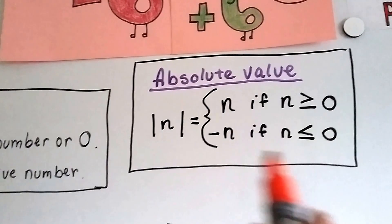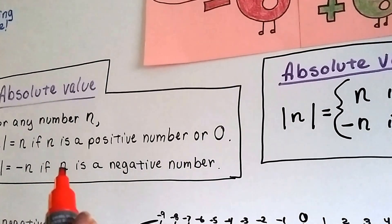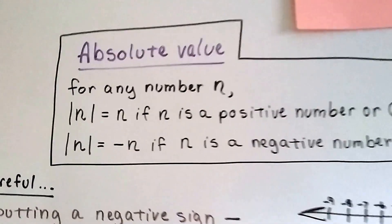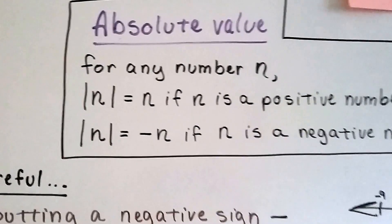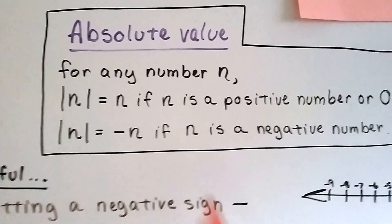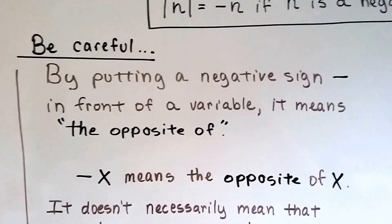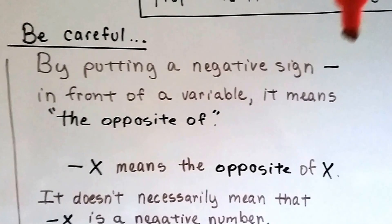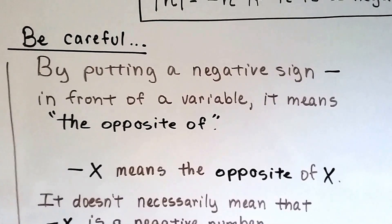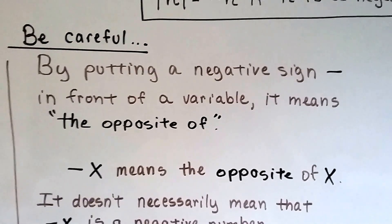Now, what is this negative here — negative n if n is a negative number? See how it says it's negative n if n is a negative number? You would think that if it was a negative number, that would have a negative sign in front of it. So we've got to be careful. By putting a negative sign — this minus sign — in front of a variable, it just means the opposite of. It doesn't mean negative; it means the opposite of.